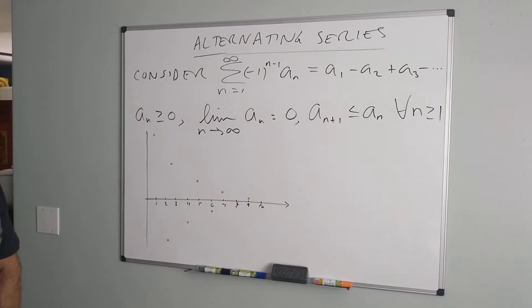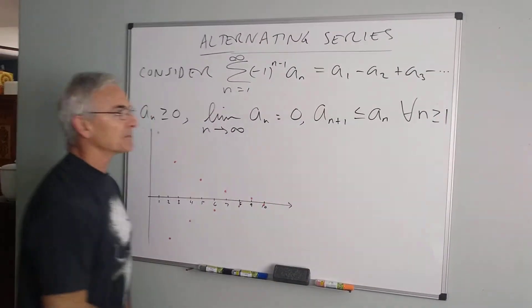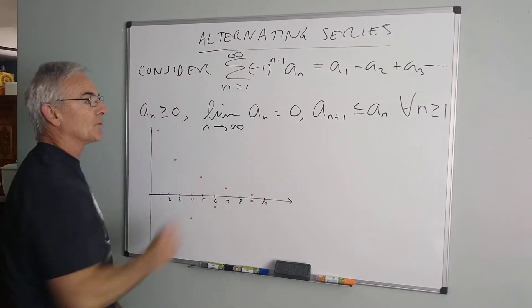So consider a series of the form where all of the terms are alternating, plus, minus, plus, minus, or something where I have negative one to a power.